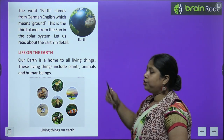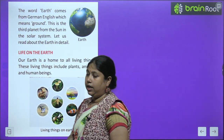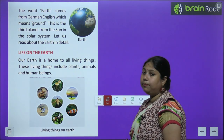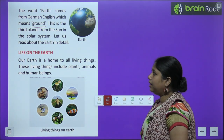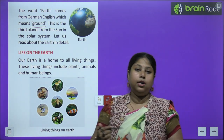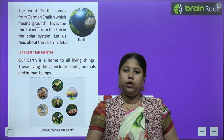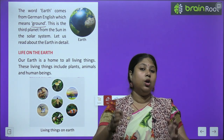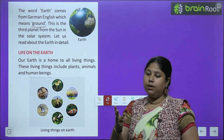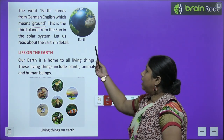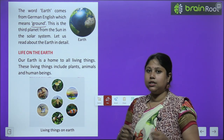The word 'earth' comes from German/English, which means ground — earth शब्द German language से आया है और earth का मतलब है ground। This is the third planet from the sun in the solar system — sun से गिनना शुरू करें तो earth third number पे आती है। Let's read about this in detail.